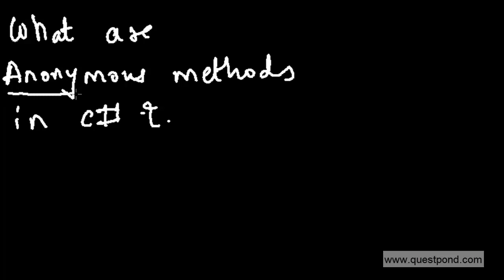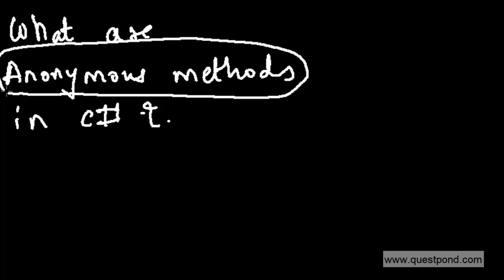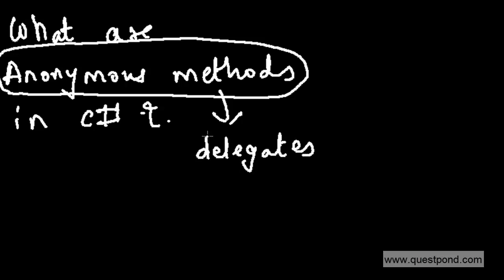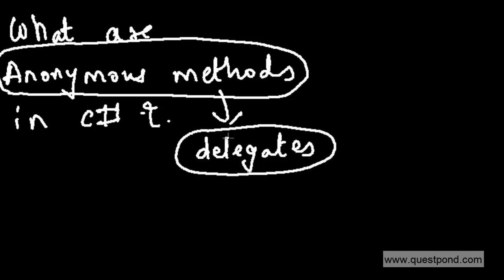In this video we will try to understand what Anonymous Methods are. Anonymous Methods are very much connected to delegates. First we will try to understand how a normal delegate looks like. We have already talked about normal delegates in the previous part of the video, but we will revisit normal delegates and then see how anonymous methods actually improve the way delegates work.